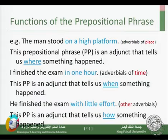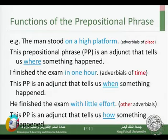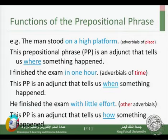Third example: 'He finished the exam with little effort.' 'With little effort' gives us manner — how something happened. 'He finished the exam' is a complete sentence on its own. Adding 'with little effort' gives additional meaning about how he finished it, so 'with little effort' is an adjunct.